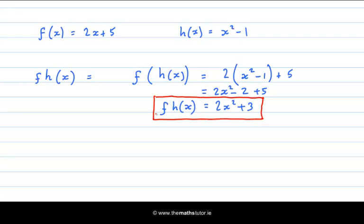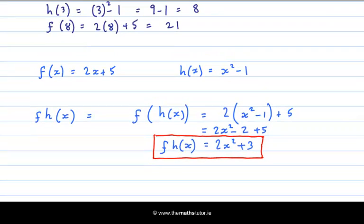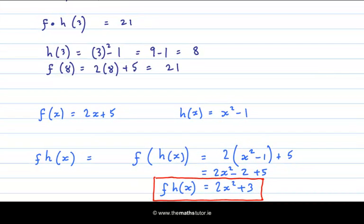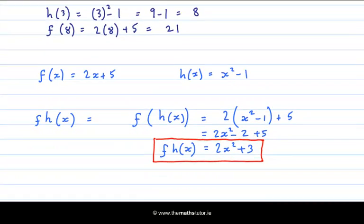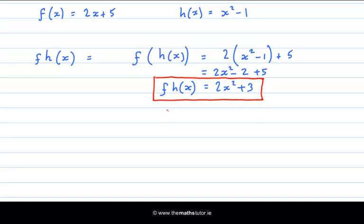And if we wanted to test this result, we already found that f after h of 3 was 21. So let's try our new function and just see f of h of 3. Do we get 21? So twice 3 squared plus 3 is twice 9, plus 3, which is 18 plus 3, which is indeed 21.